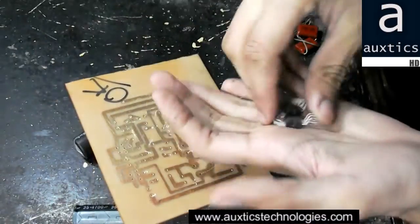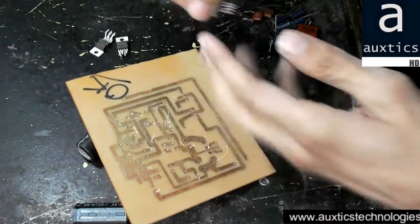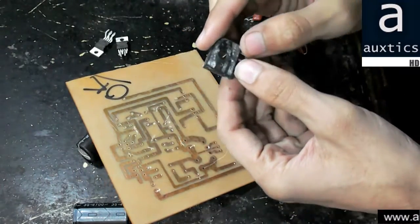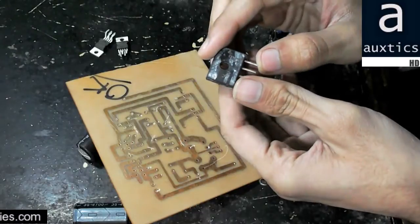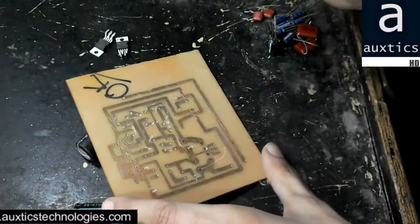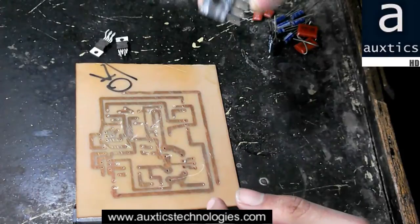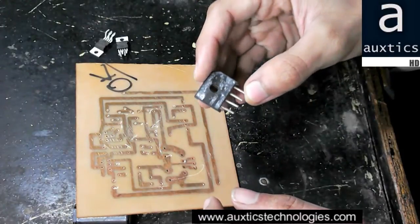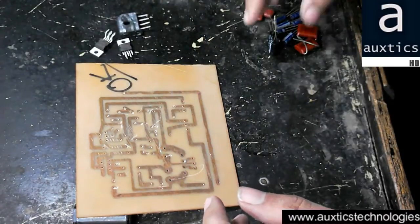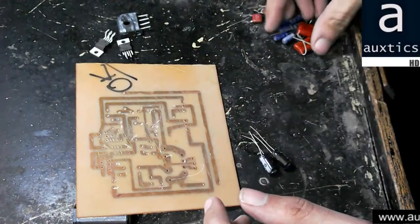This is the diode bridge for the rectification, which is the power supply section of your PCB board. This will be mounted on the power supply section. These are the required capacitors.